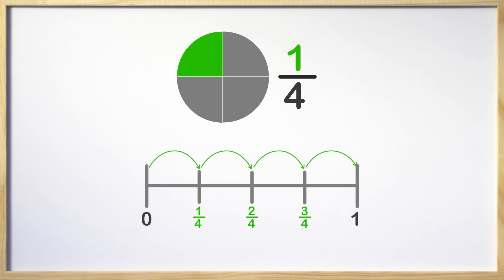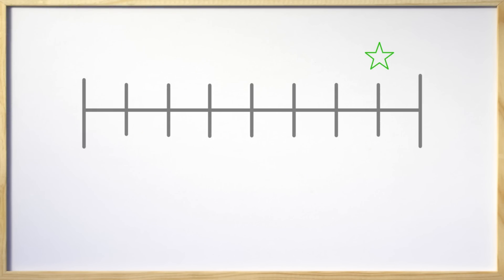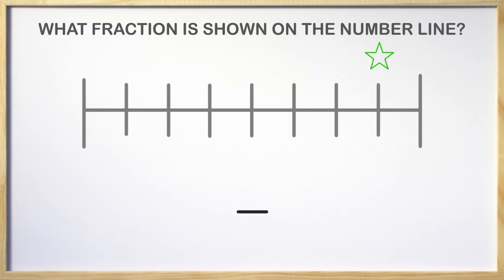That was great! Let's look at a problem to see if we can solve it. The problem says what fraction is shown on the number line. One way to start this is by finding the denominator in the fraction. Remember the denominator is the total amount of parts, and in order to find that, we need to count all the parts.